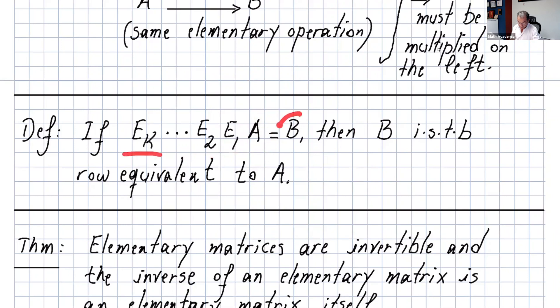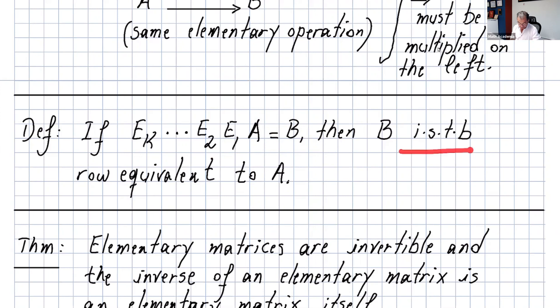By definition, if you can multiply A on the left by elementary matrices to get B, then B is said to be row equivalent to A.